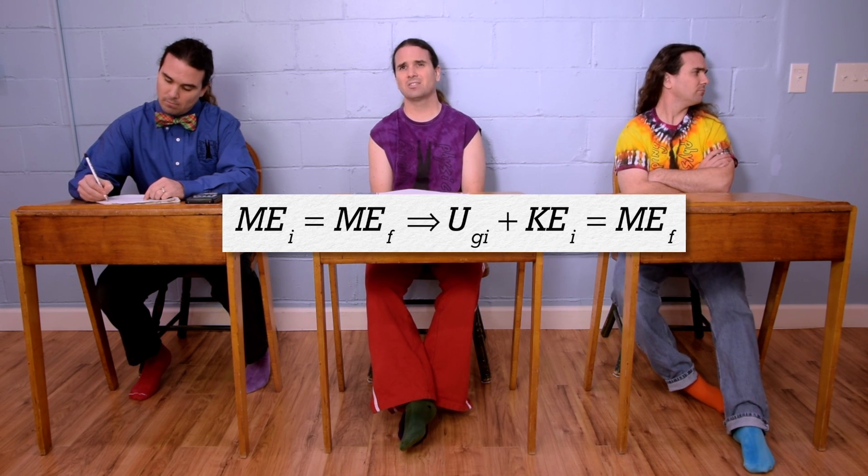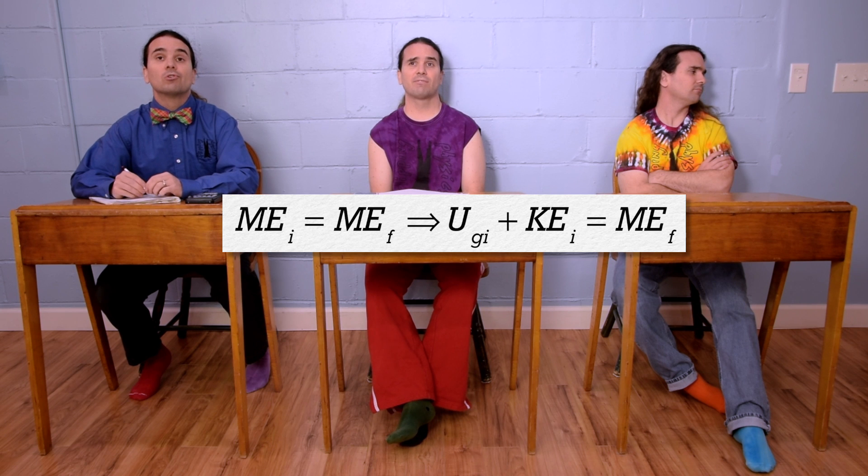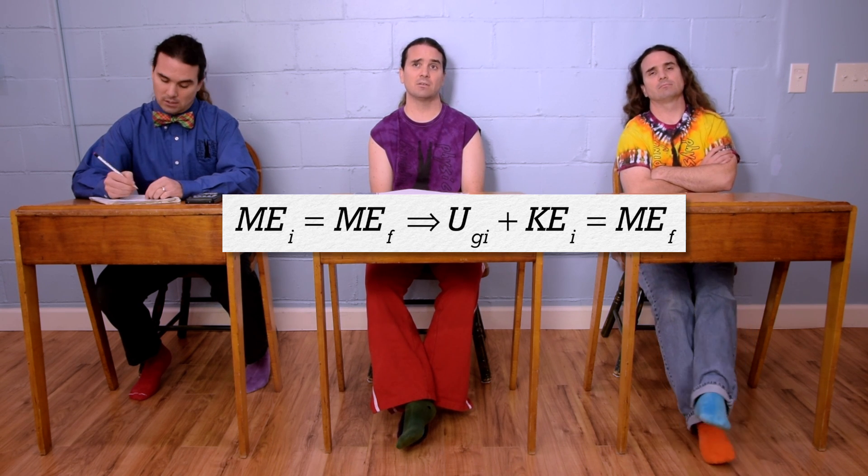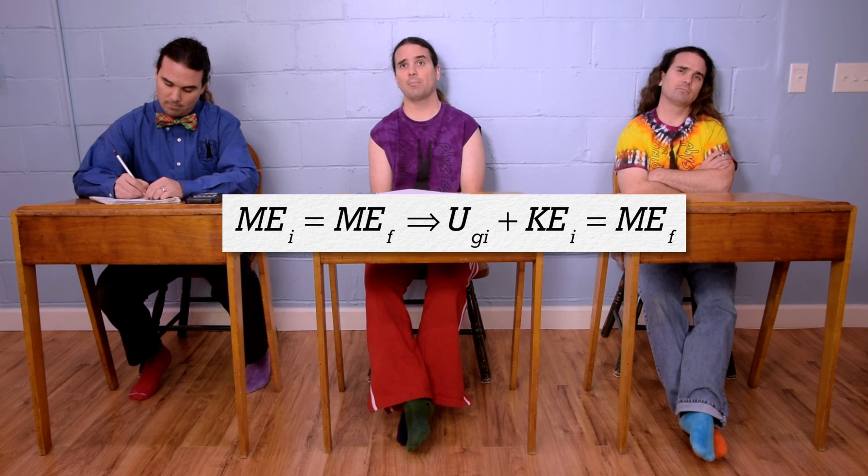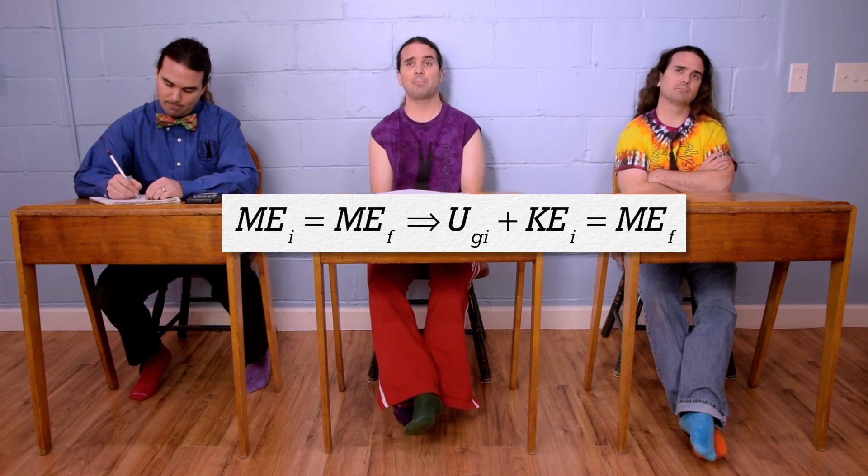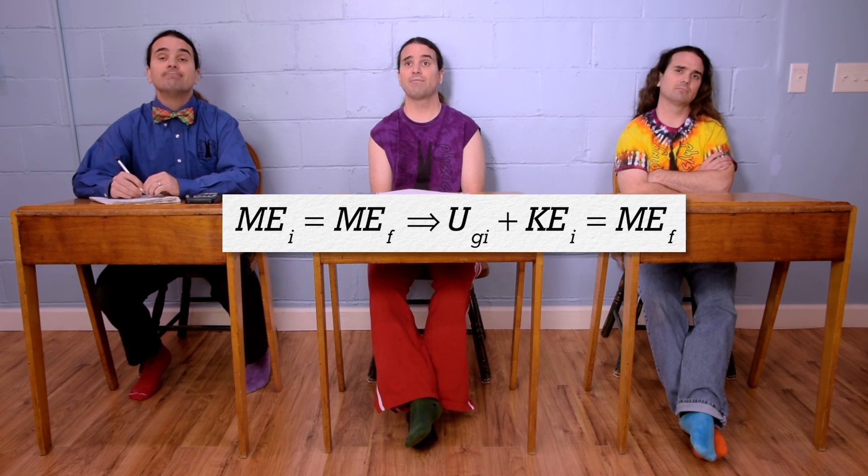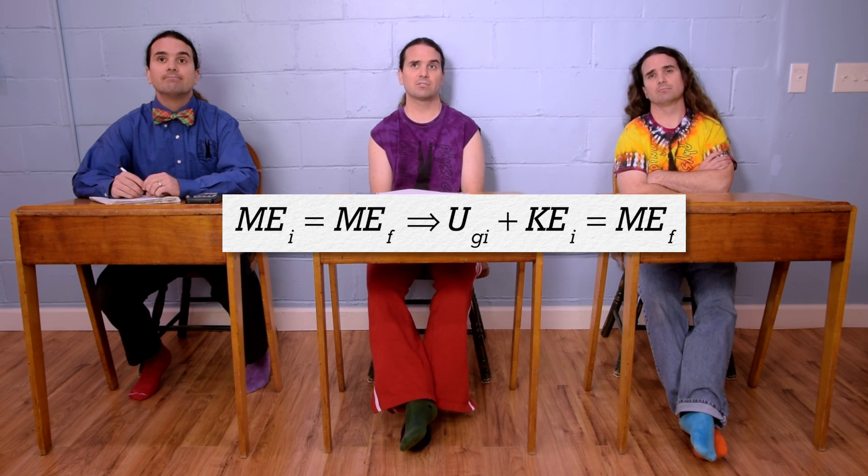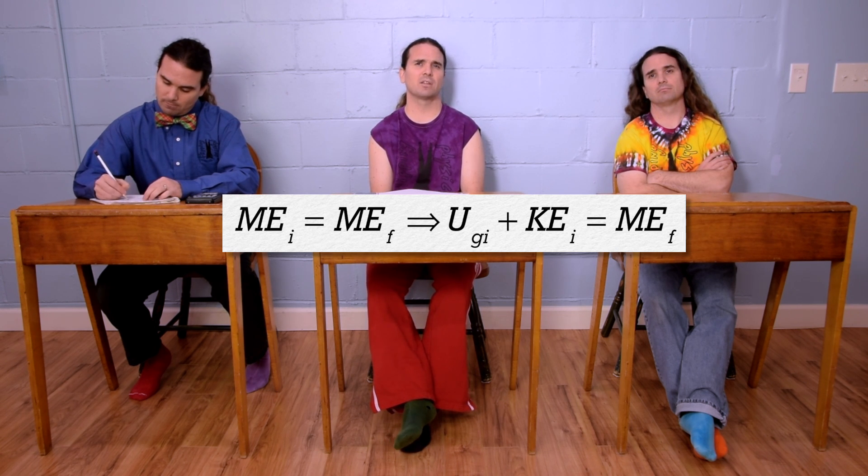With regards to final energy, because we are looking for the minimum launch velocity, Bo's final velocity will be zero. Just like a ball thrown upward will have a final velocity at the top of zero. So, no final kinetic energy. And Bo ends infinitely far from the Earth, so no gravitational potential energy.